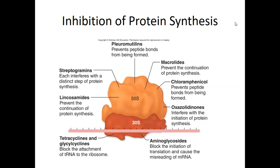mRNA is being fed through the ribosome. Every three nucleotides forms a codon. On the end of transfer RNA you have the anticodon, and on the other end you have your amino acid attached. The transfer RNA matches up with the codon, and that's how you know what amino acid to bring in. If you interfere with the transfer RNA, you aren't allowing those amino acids to come in and be added.